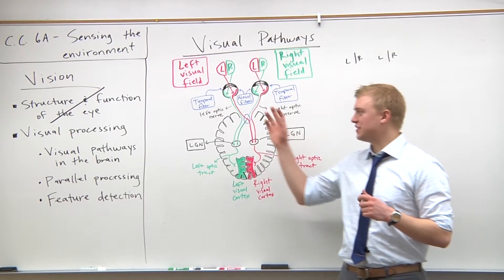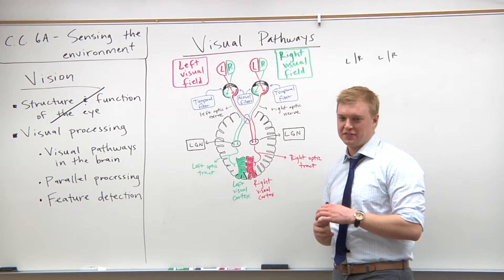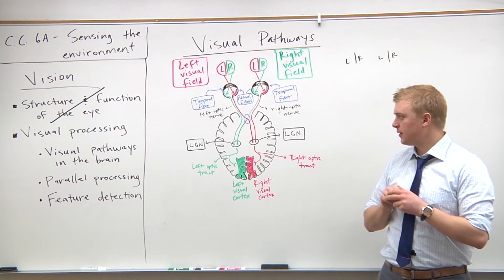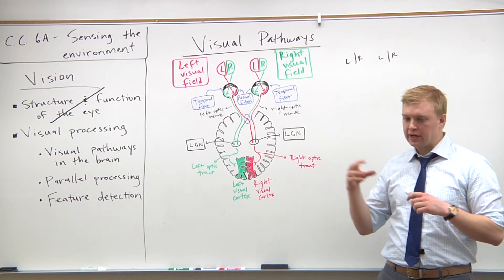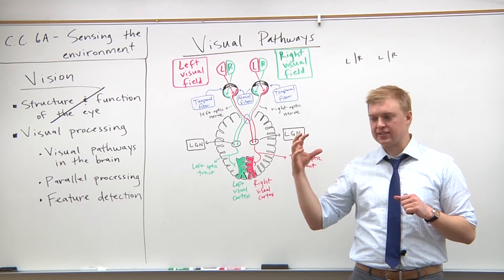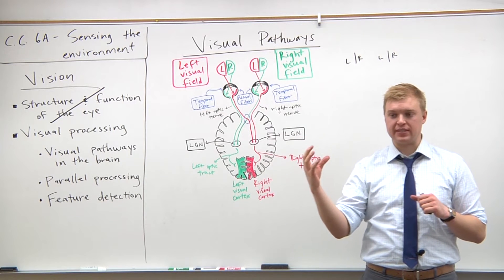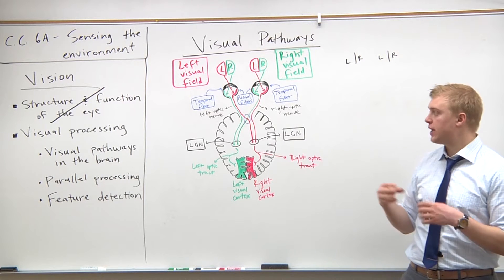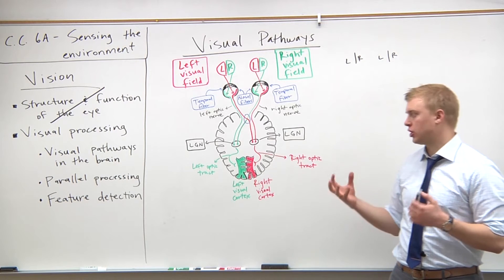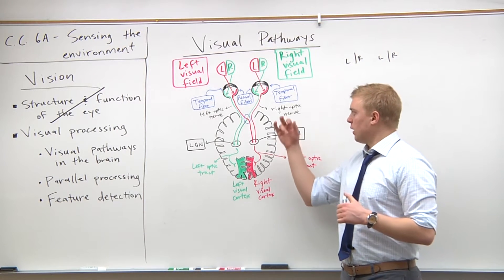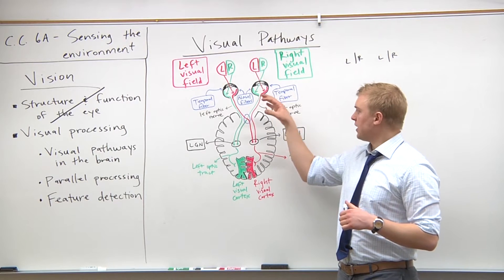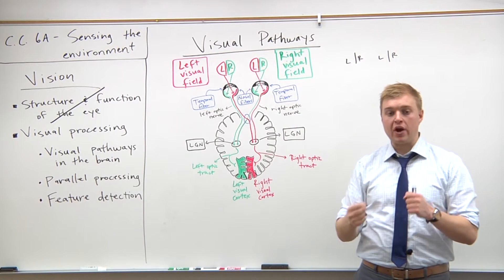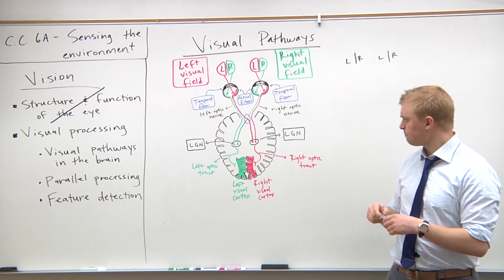We just finished up the structure and function of the eye. The signal is now being sent down the axons of the ganglion cells, which make up the optic nerve. Now we're going to analyze how this signal is sent down the optic nerve and where in the brain it is being processed.